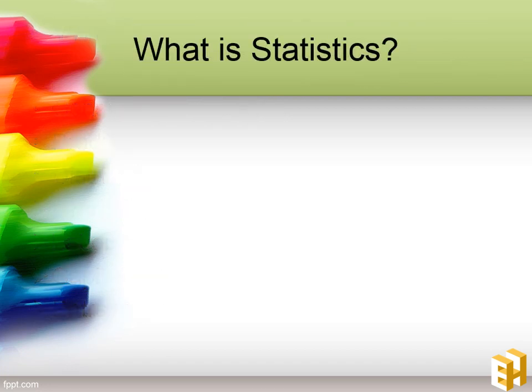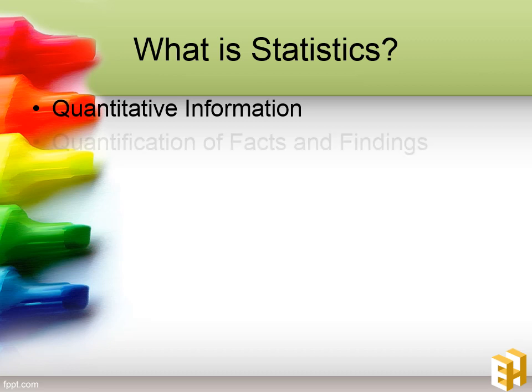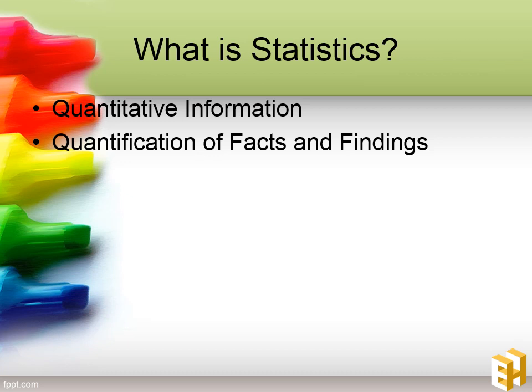Now let's study what is statistics. First of all, statistics is quantitative information — it is a number giving you some kind of information. For example, 76% literacy in India — that 76% is your statistics, giving you some kind of information. Second, statistics is a quantification of facts and findings. Through statistics, you receive facts, such as 76% of the population in India is literate, which is giving you some kind of fact or finding.